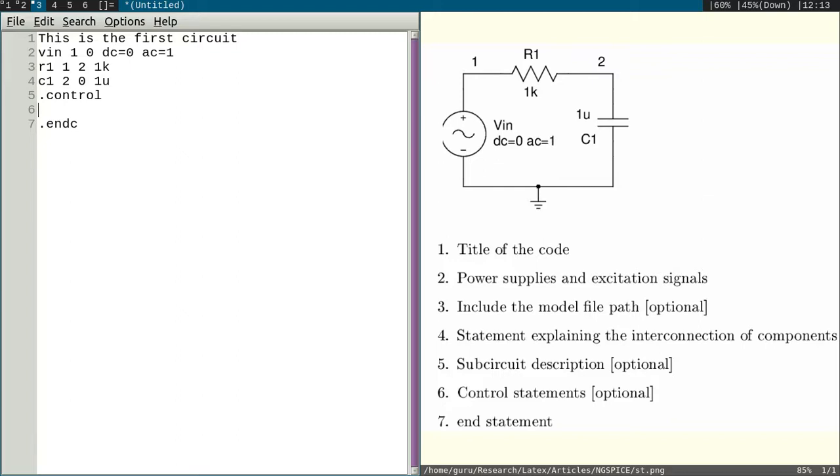For that, syntax is first you mention AC, and scale you mention whether it is linear, logarithmic, or certain points you want to plot. I would like to choose logarithmic, so I will write DEC. DEC means decade, decade scale. Next one is the number of points per decade. I would like to consider 100 points per decade. You can have 10, 20, whatever number you wish.